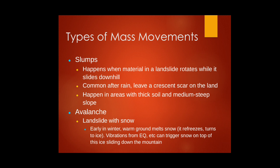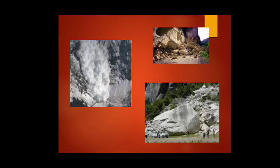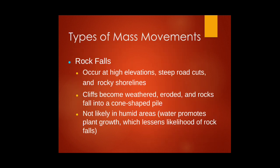Avalanches are expected in winter seasons and as snow starts to melt, and can also be triggered by tectonic plate movements and earthquakes. The left image shows a snow avalanche and the right image shows rocks rolling down a hill. Rock falls occur at high elevations, steep road cuts, and rocky shorelines — when cliffs become weathered and eroded, rocks fall. In humid areas this is less likely because plants grow over rocky mountain areas and roots penetrate deep, holding the rock in place.